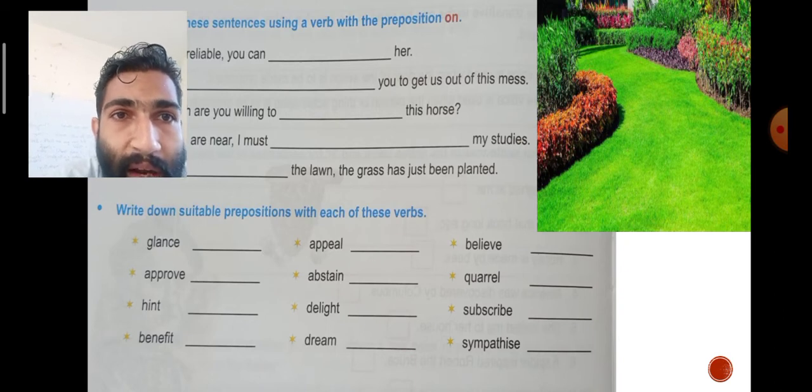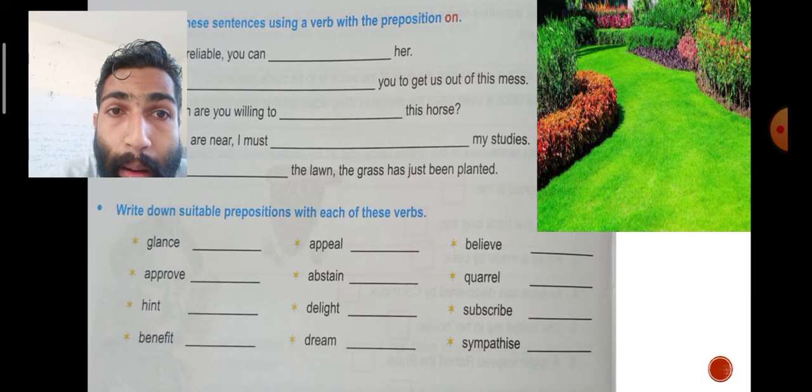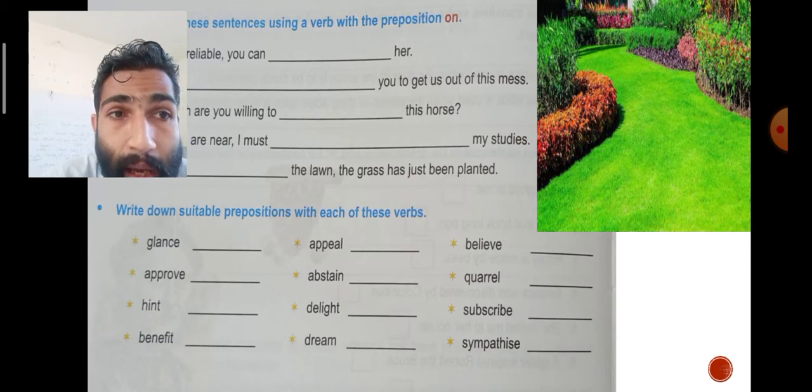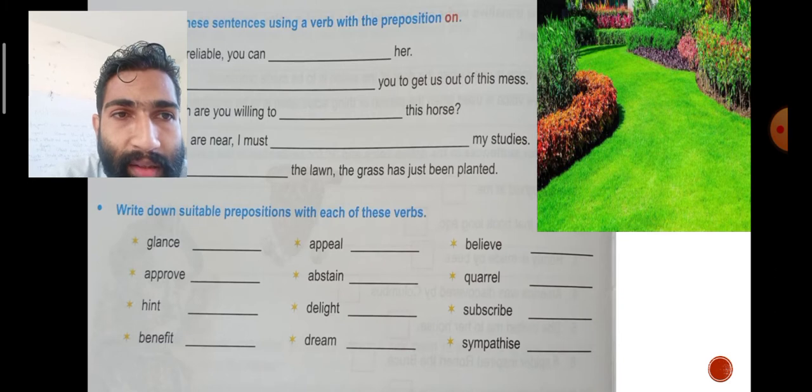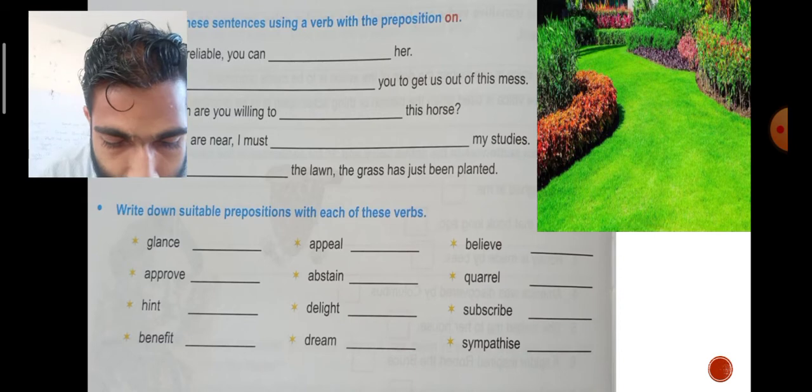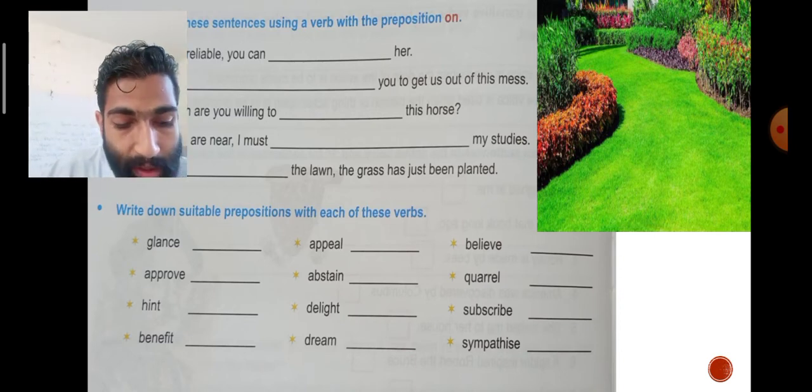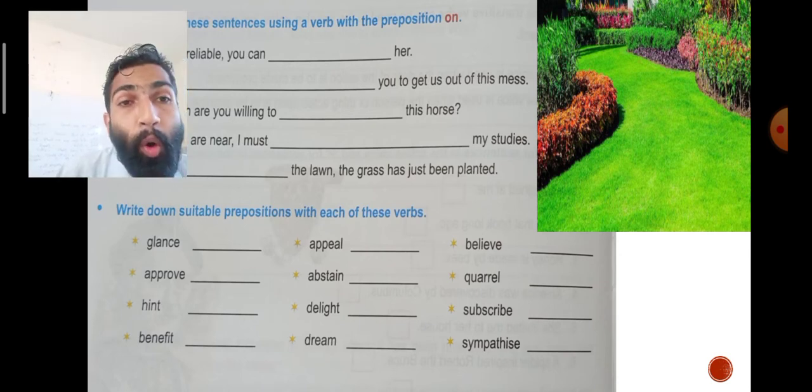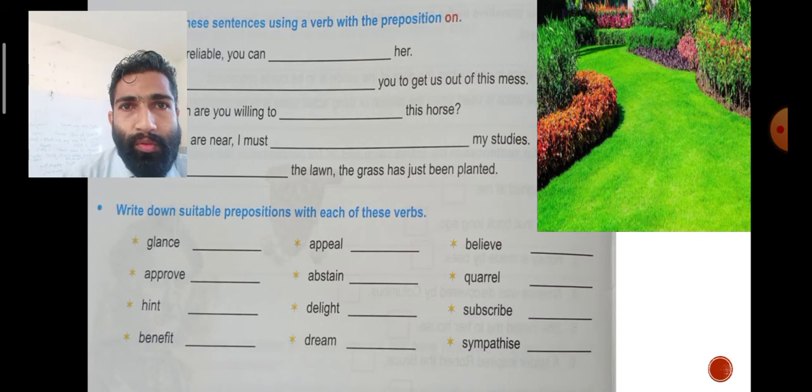Next, write down suitable prepositions with each of these verbs: glance, appeal, believe, approve, abstain, quarrel, hint, delight, subscribe, benefit, dream, sympathize. Glance means to look shortly. Abstain means to hold back. Appeal means requesting.